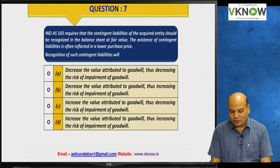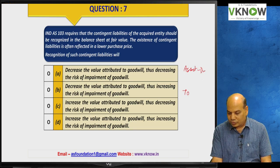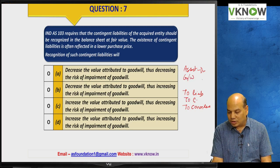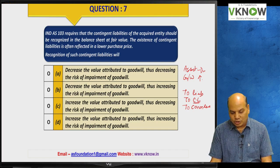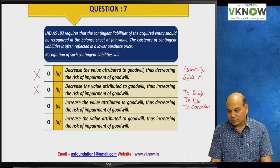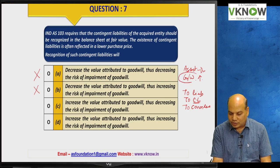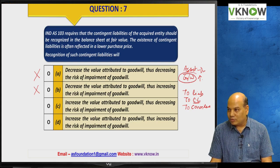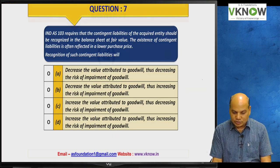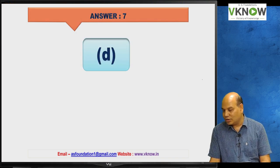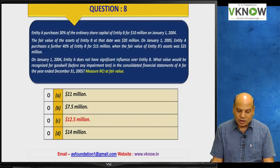To answer this, visualize the treatment for business combination: assets on one side, liabilities and consideration on the other, with goodwill as the balancing figure. If you add one more liability — the contingent liability — goodwill will increase. So we eliminate options that say goodwill decreases. We are left with options C and D. Since goodwill value increases, the risk of impairment will also increase. The answer is D — applying both intelligence and the elimination method.